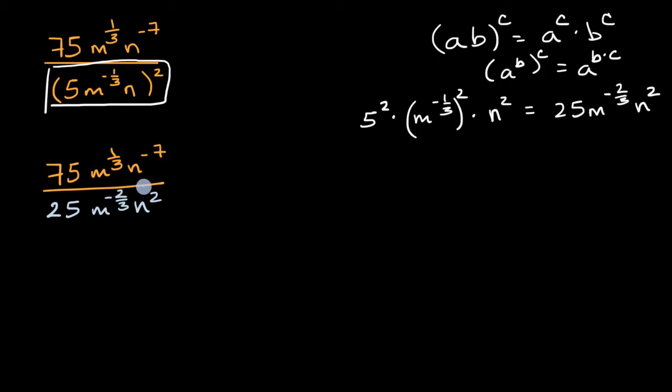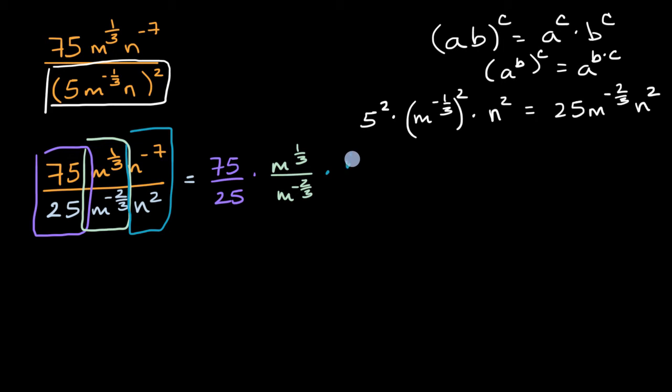Now some of y'all might immediately be able to skip some steps here, but I'll try to make it very, very explicit. What I'm going to do is rewrite this expression as the product of fractions or as the product of rational expressions. So I could rewrite this as being equal to 75 divided by 25, times m to the 1 3rd over m to the negative 2 3rds, and then times n to the negative 7 over n squared.